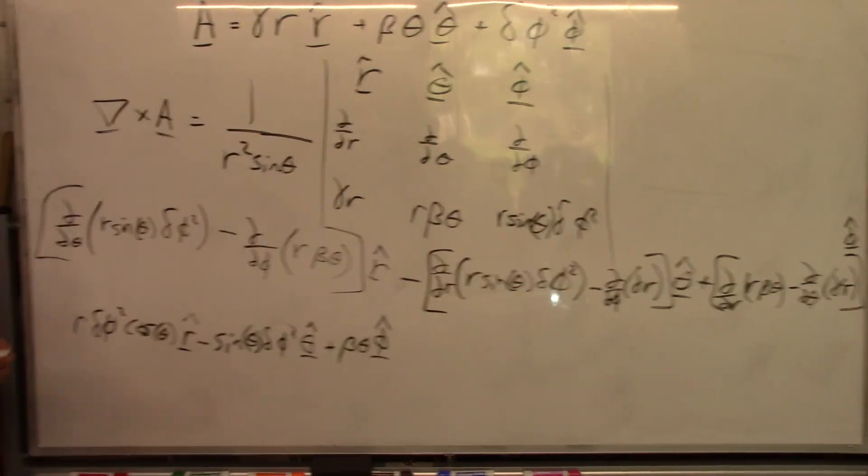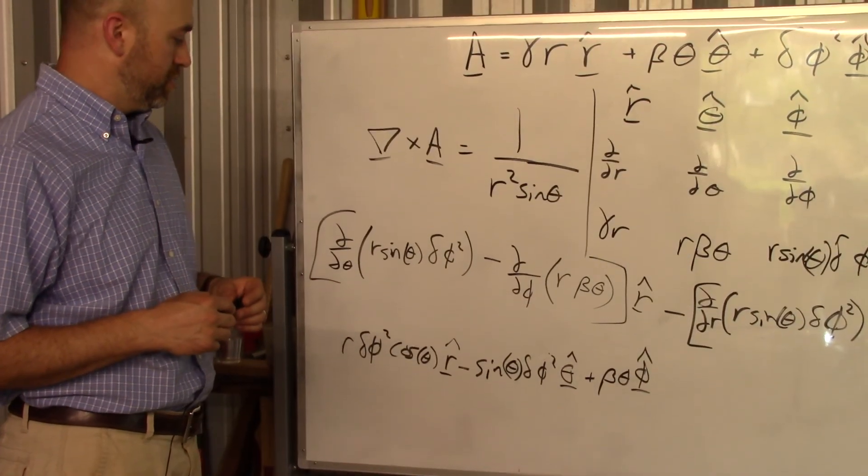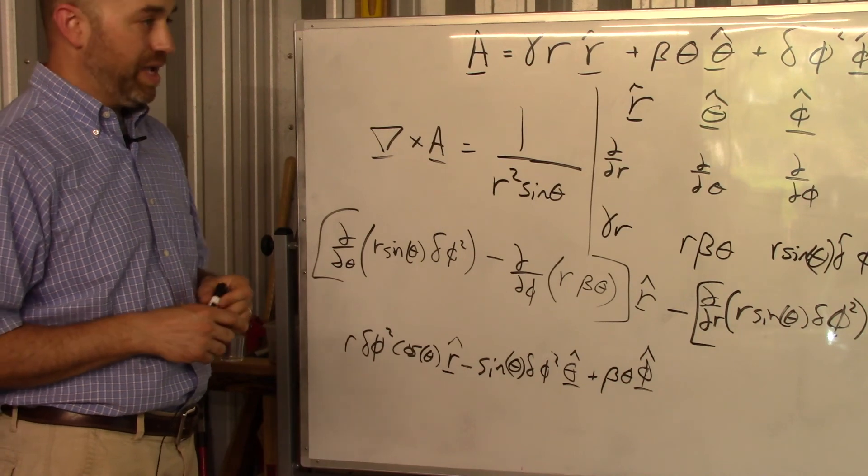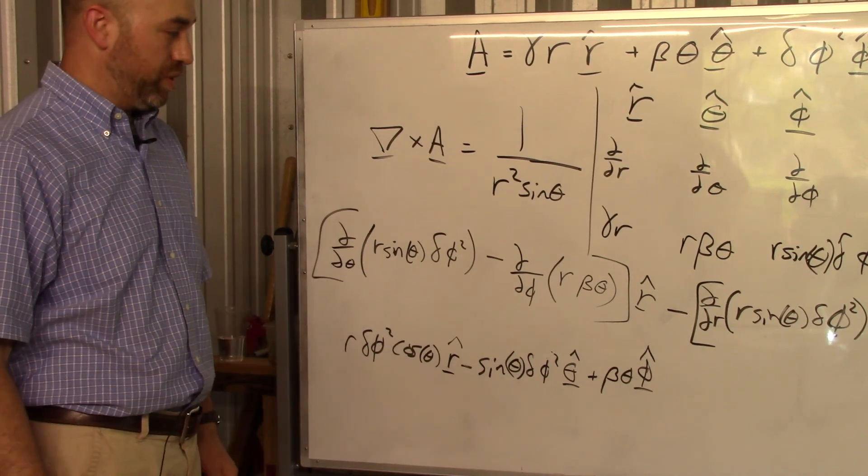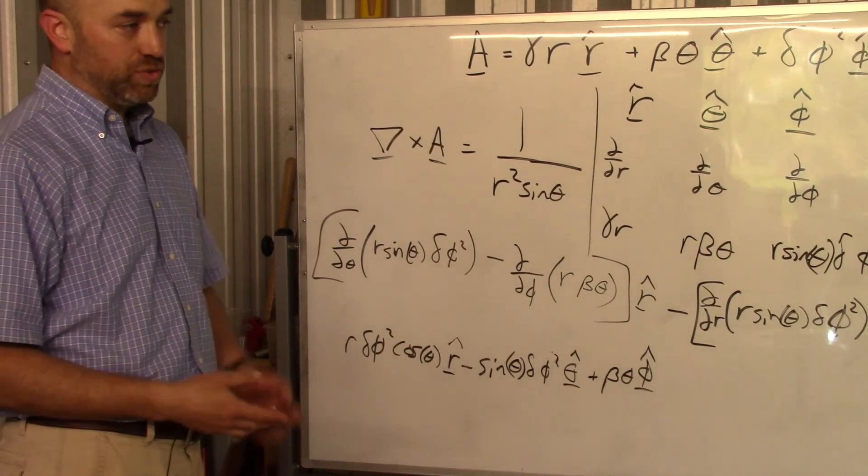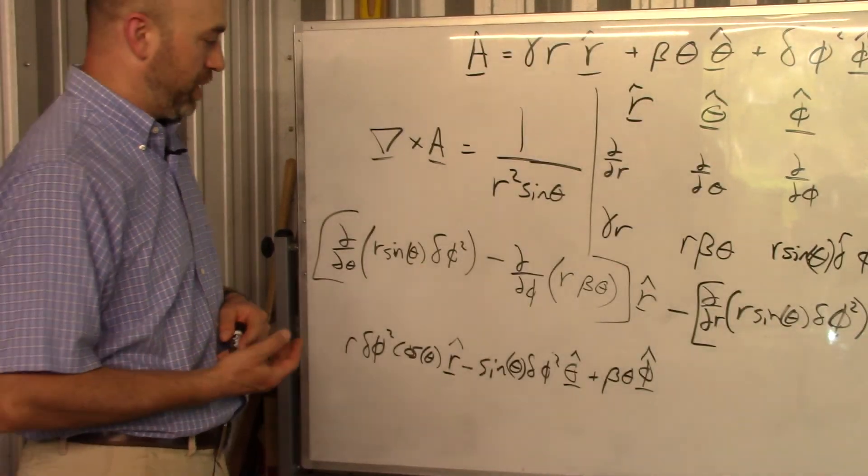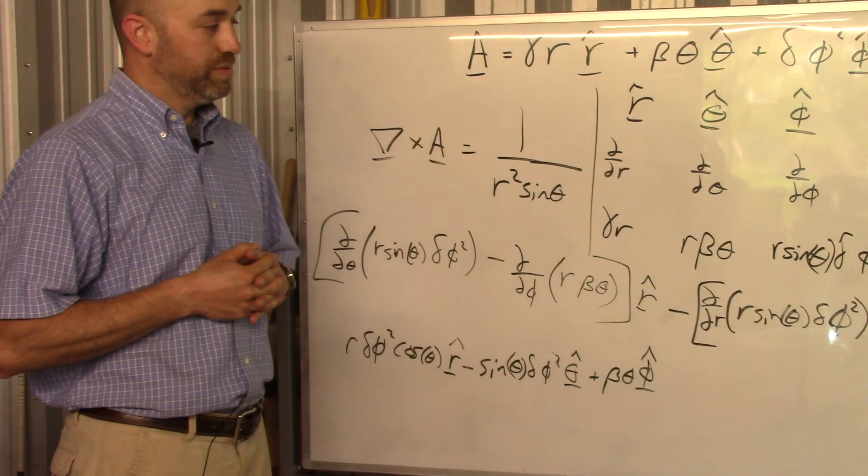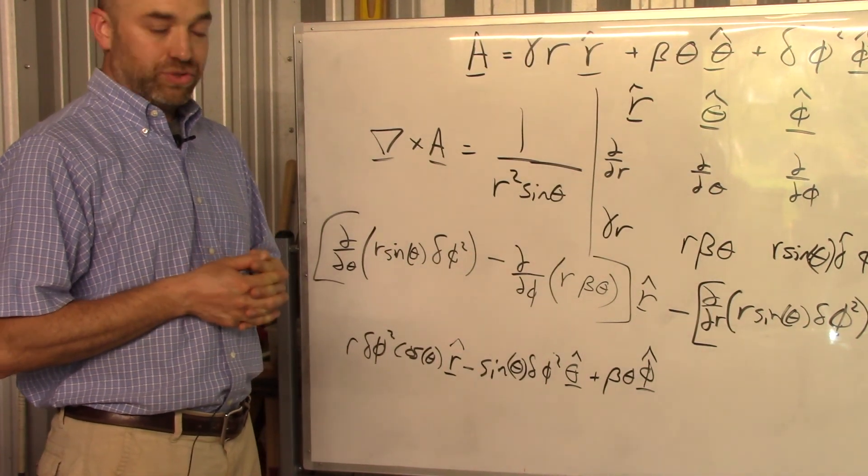And there you go. That's how you do curl of A in spherical coordinates. And this is a totally made up problem. But I'm just showing you how to do it so you can use your coordinate system sheet effectively. Okay. That's a good place to stop.